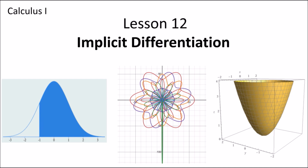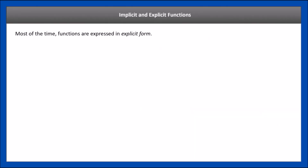Up until now we've done what is called explicit differentiation. We're going to talk about the difference between explicit and implicit. Most of the time, functions are expressed in what is called the explicit form. Here are a few examples. For example, y equals 3x squared minus 5. Notice that the function is explicitly in terms of x on one side — you have y on one side, separated from x on the other side.